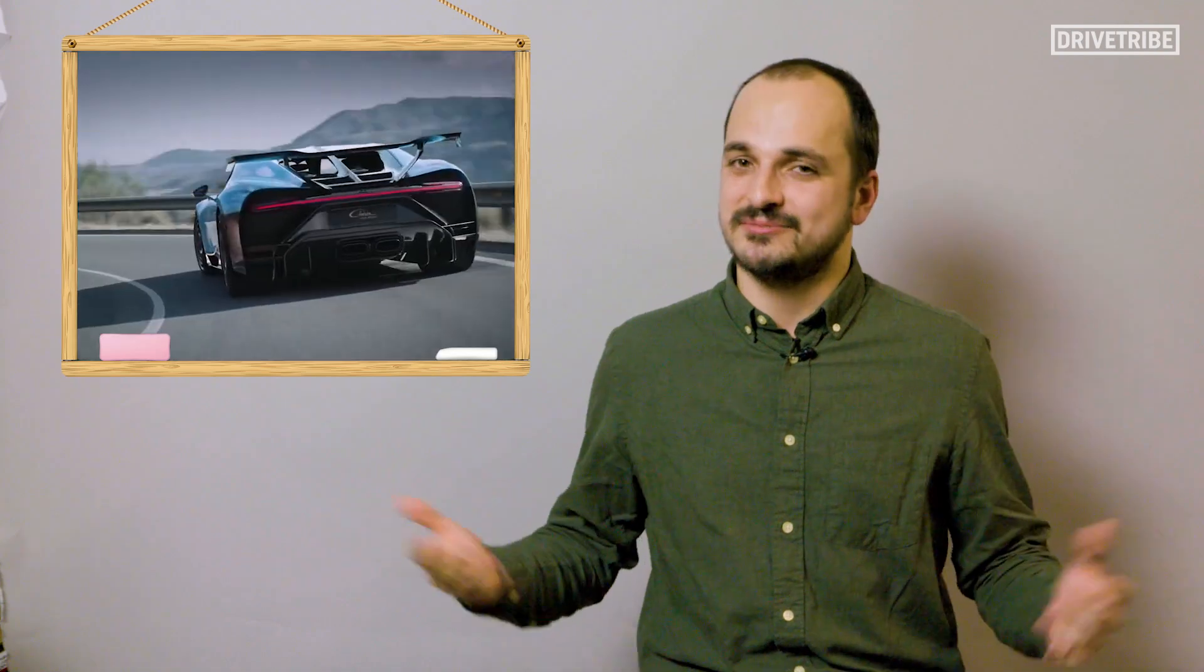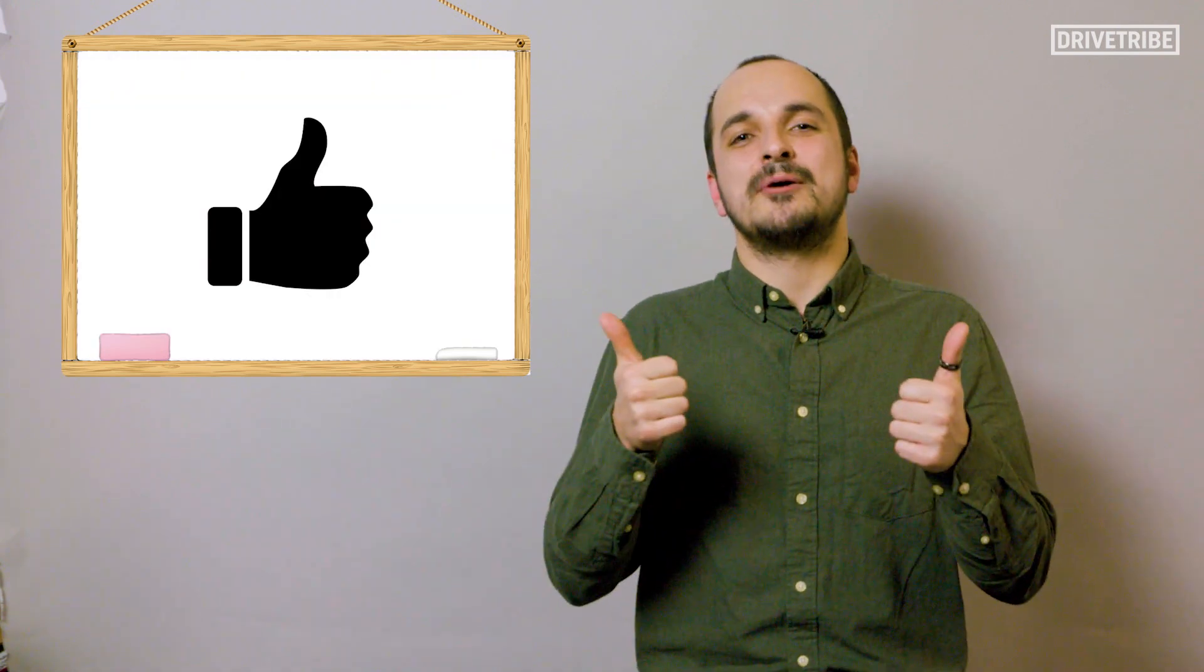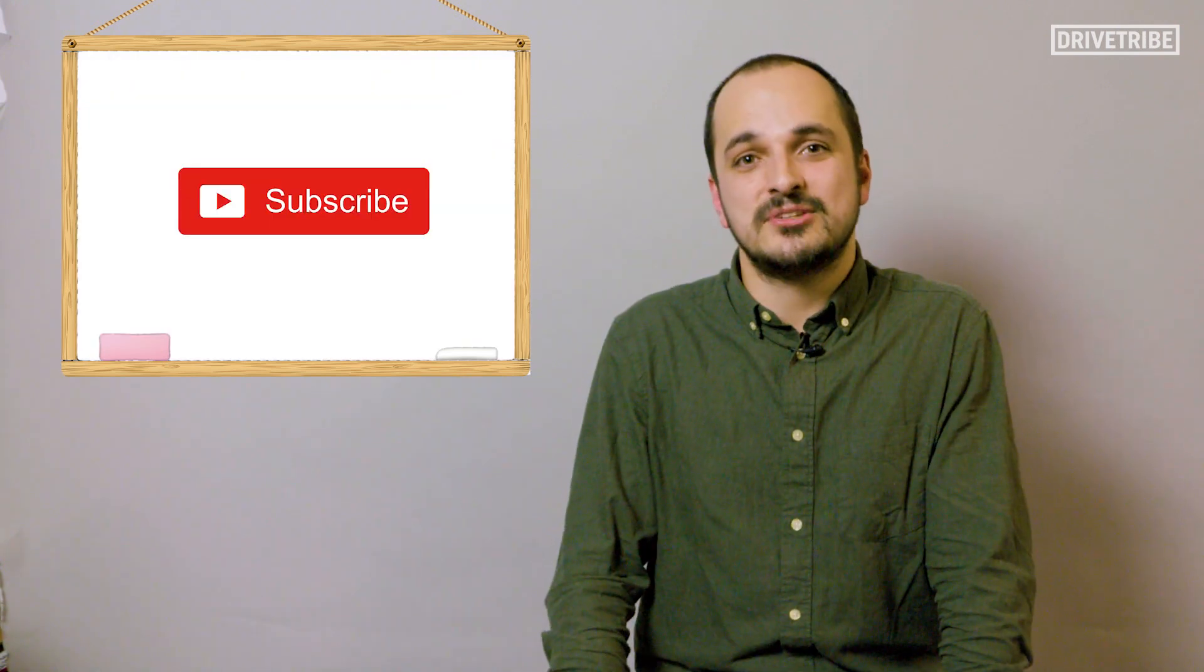So yeah, the new Alfa GTA looks lovely, and the new Bugatti Chiron, the track focused one, looks like an absolute beast, but the coolest thing to come from Geneva this year is definitely this incredible little engine. If you like this video, give it a thumbs up, and don't forget to subscribe to the drive tribe.